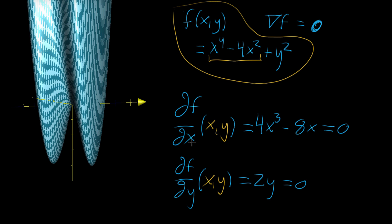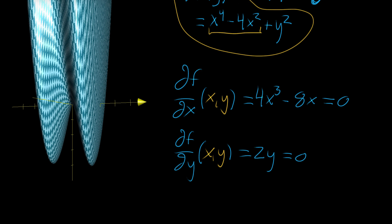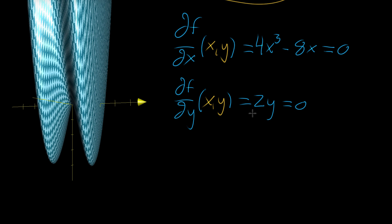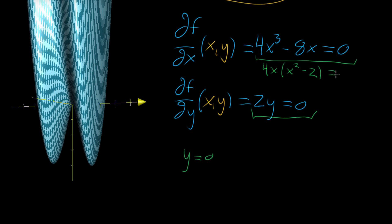I chose a simple example where the partial derivative equation in x only includes x, and the one in y only includes y — but that's not always the case. Solving this system: the equation 2y = 0 gives us y = 0. Then the second equation, 4x³ − 8x = 0, can be factored as 4x(x² − 2) = 0.